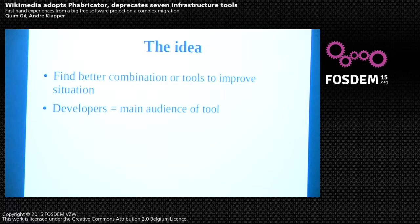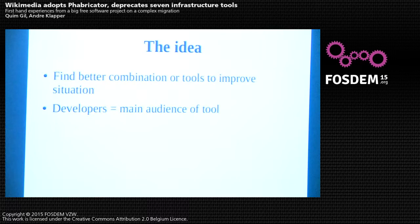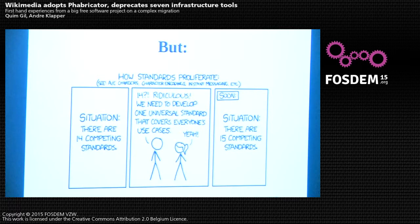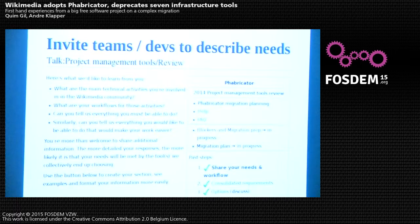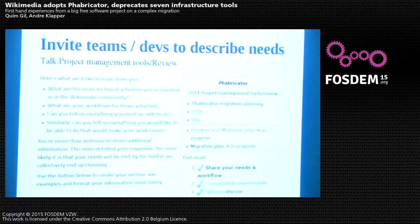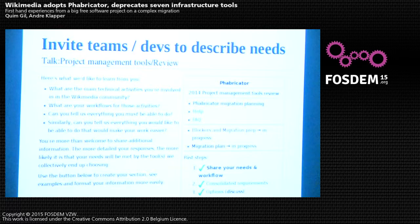The idea was to find something better — or at least discuss if we could — with developers as the main audience, not editors or readers of Wikipedia. The problem with these things is that if you want a new standard in your community, you might end up with just one more tool, which we wanted to avoid. Around December or January we invited teams and developers to describe their needs on a wiki page.